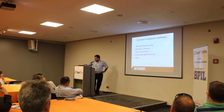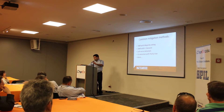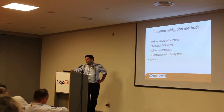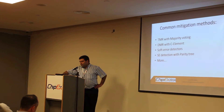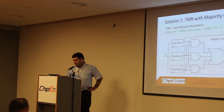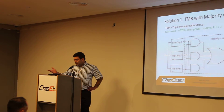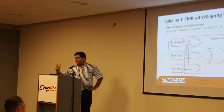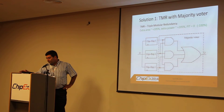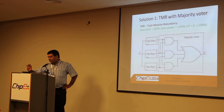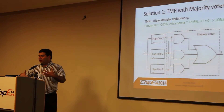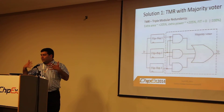So what are the common mitigation methods? I'm going to talk about three of them: TMR (triple modular redundancy), majority voting, DMR, and soft error hardening techniques. With TMR, we simply have three flops instead of one. The input goes to all of them — they all sample the same value.